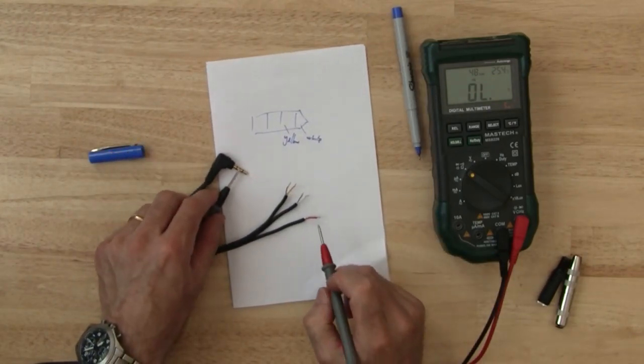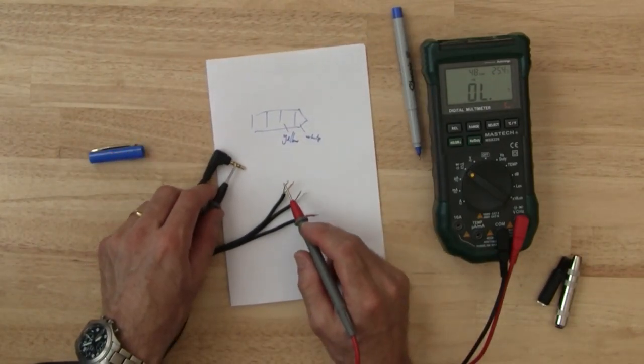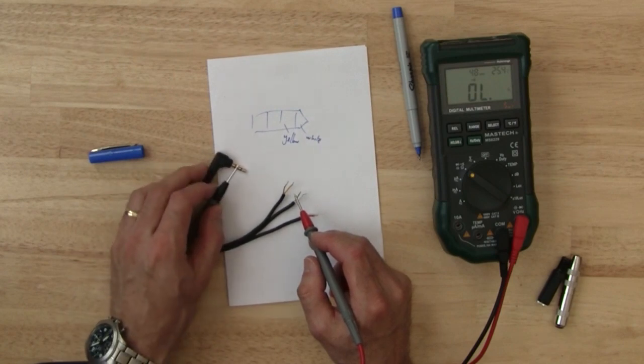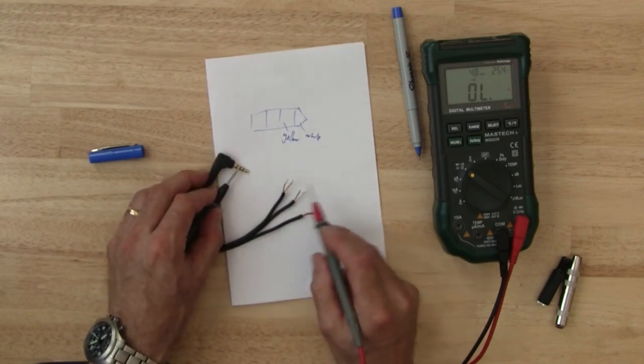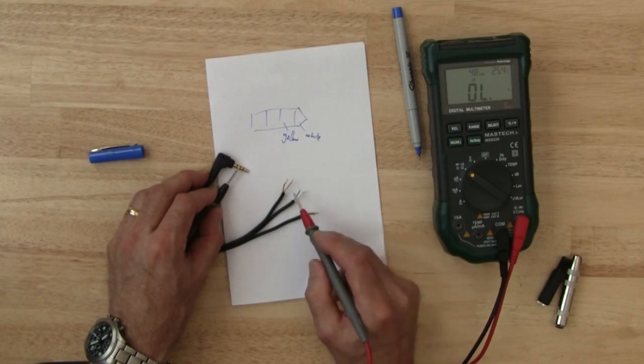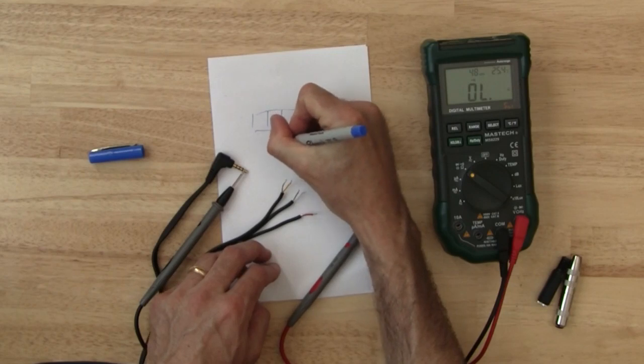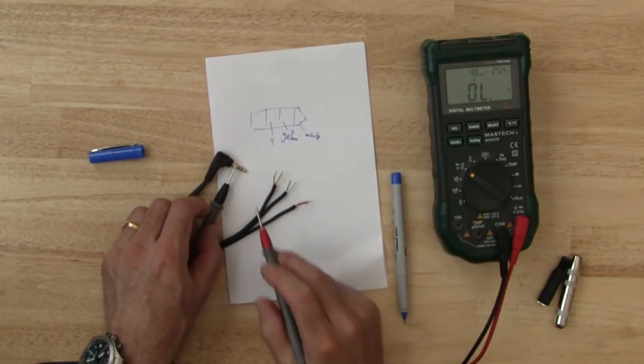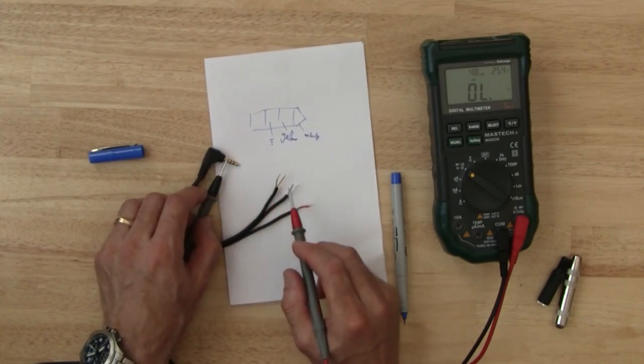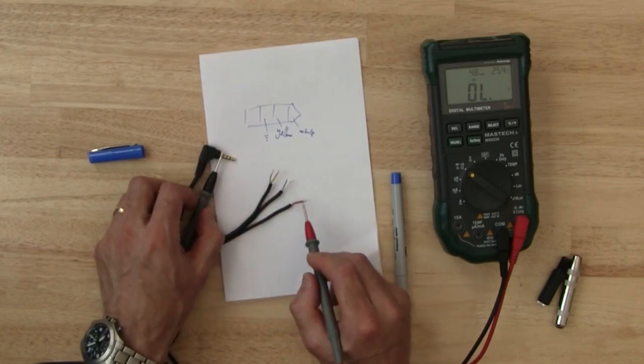Next ring is ground and you can see that each of these wires coming out the shield is continuous to the ground.